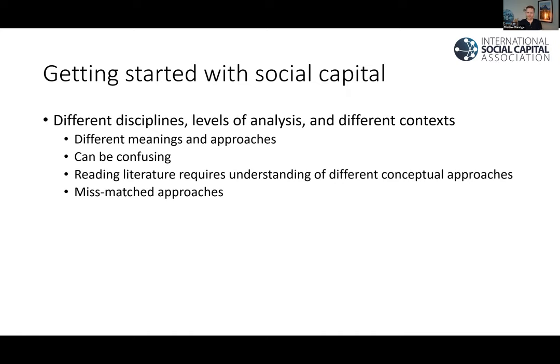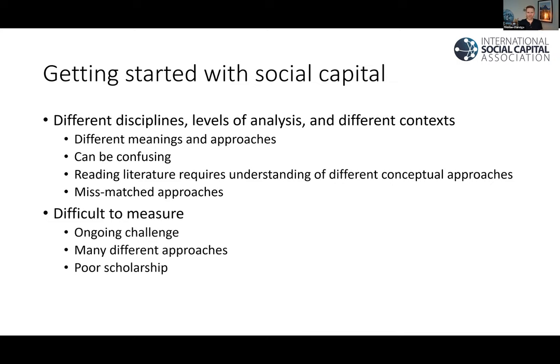Reading the literature requires an understanding of these different conceptual approaches, otherwise we can get mismatches. Unfortunately, in the literature we see quite a lot of mismatches that can create even more confusion when you're first reading it. Social capital is also quite difficult to measure. A lot of people have measured it, but it's an ongoing challenge — there are many different approaches, and unfortunately there's often some poor scholarship, with inappropriate assumptions or tautologies that can really bring into question the results of some of the research.